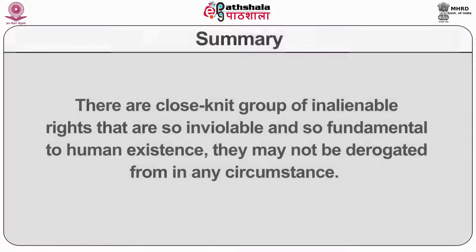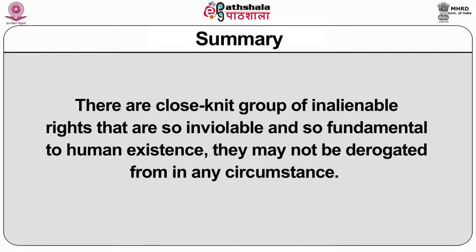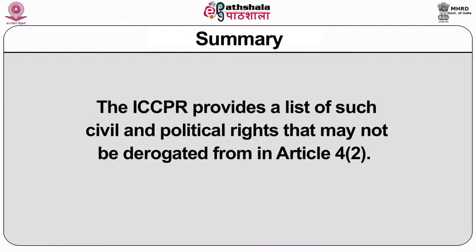Thus, ordinarily state parties have the right to express limitations or reservations from treaty obligations, and may derogate from them in times of emergency or on grounds specified for derogation in the conventions. However, there are close-knit groups of inalienable rights that are so inviolable and so fundamental to human existence that they may not be derogated from in any circumstances. The ICCPR provides a list of such civil and political rights that may not be derogated from, in Article 4(2).